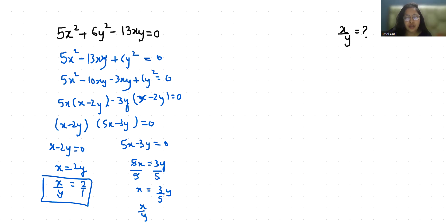So two ratios are x/y equals 2/1 and x/y equals 3/5. I hope it's clear and you find it useful. So please give us a thumbs up and do subscribe to my channel. Stay tuned.